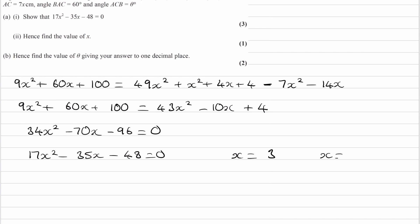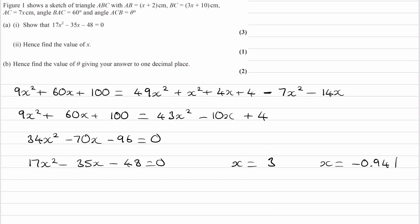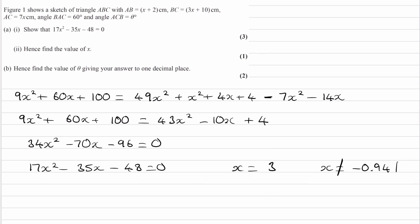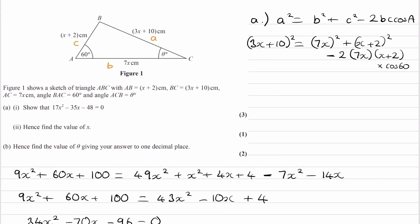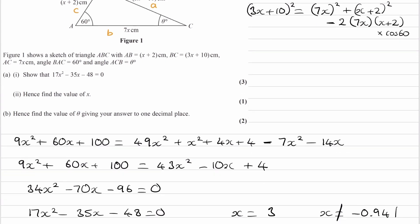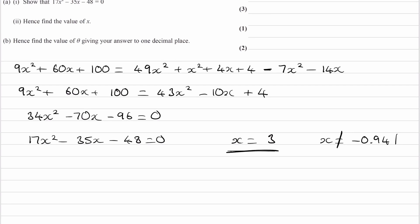Or x is equal to minus 0.941. It can't be the negative one. Because if you look at the triangle that we have, well, this side will then end up being negative. Which doesn't make sense. You can't have a negative side. So x can't be minus 0.941. x must therefore be 3. So that is then our answer to part 2.